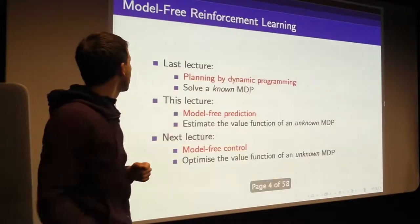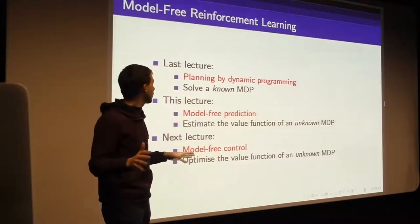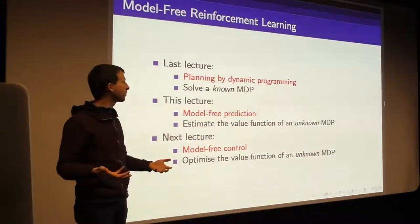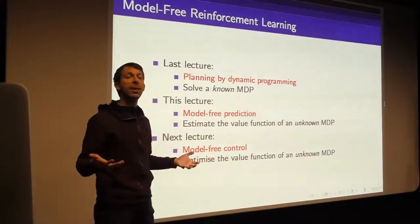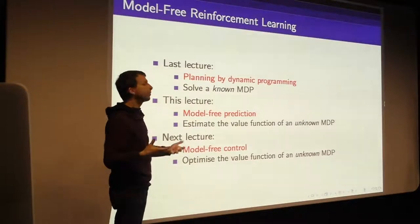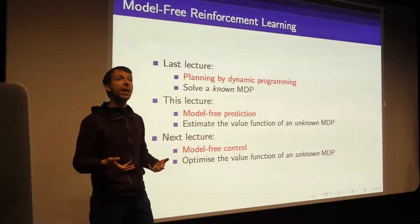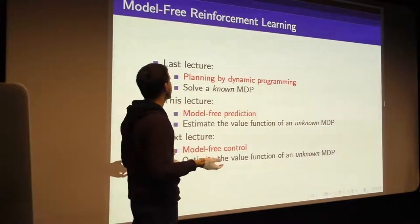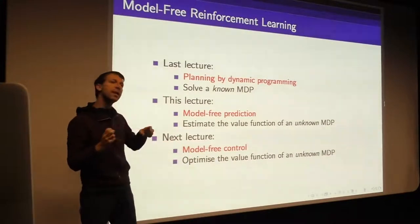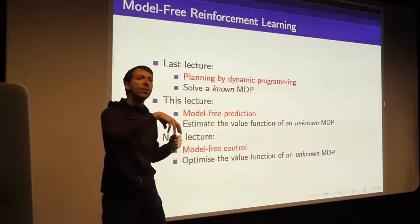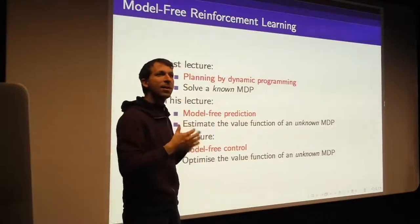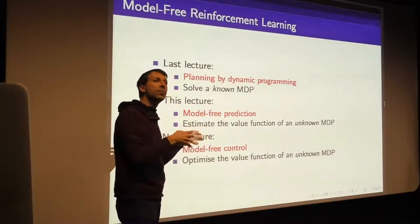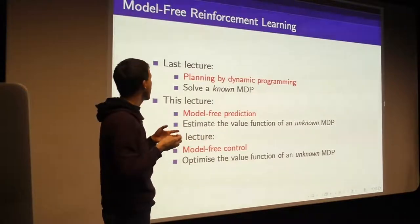Let's take stock of where we are. Last lecture we formalized environments using a Markov decision process and saw how to solve an MDP — meaning find the optimal behavior that maximizes reward from any state. But this was all for a known MDP: someone had to plug in the dynamics and reward function, and then we could use dynamic programming with Bellman equations iterated again and again to output the optimal value function and policy.